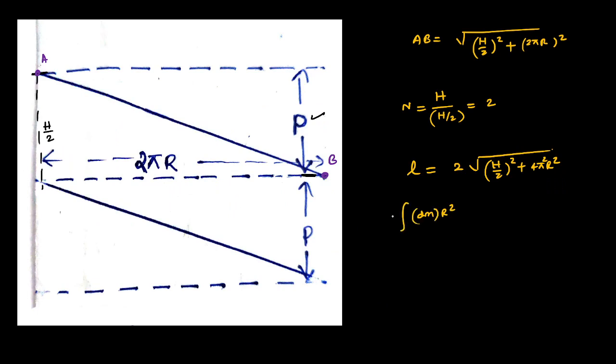Suppose if we integrate it for the entire helix, since dm is same for every single element like it is at the same distance, we can take r² where m is the mass of the entire helix. Here the mass of the entire helix should be expressed in terms of linear mass density which is lambda times length of the helix times r². Now we can substitute l value from the expression: it is going to be 2 root of h²/4 plus 4π²r² times r².